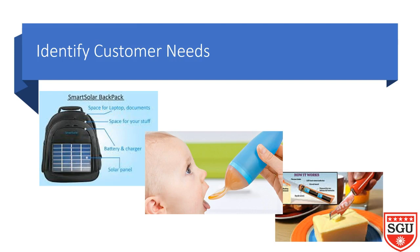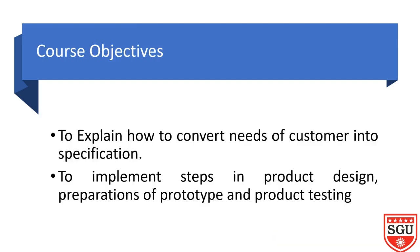The first product shown is the smart solar backpack. The second product is a bottle to which a spoon is attached. The third product is the hot edge knife, which is useful for cutting butter — just remove it if the butter is hard.